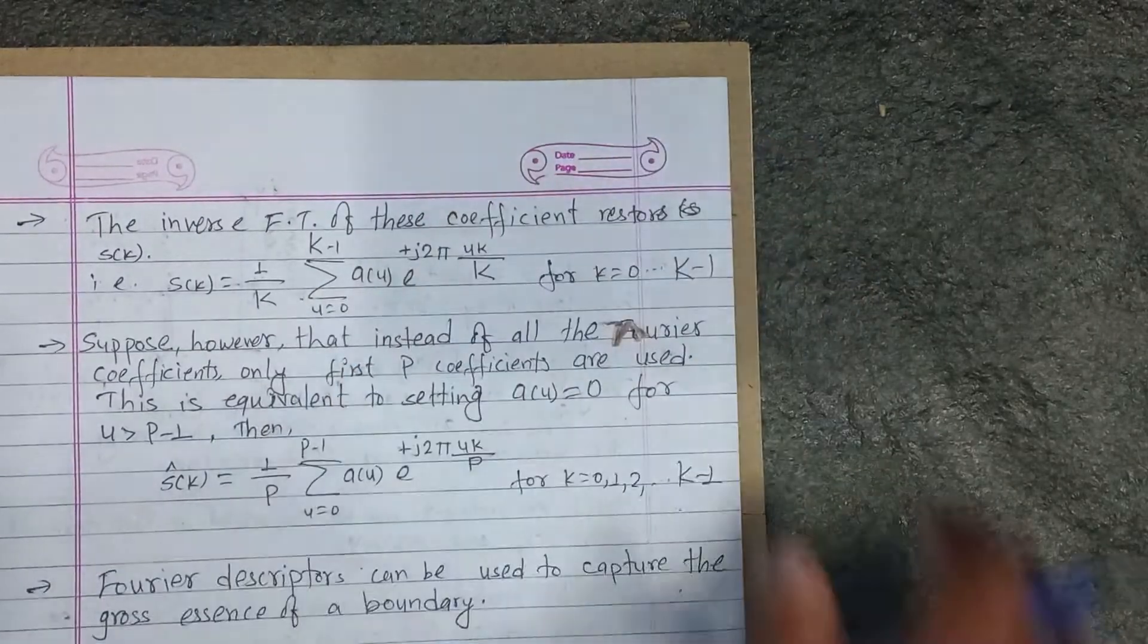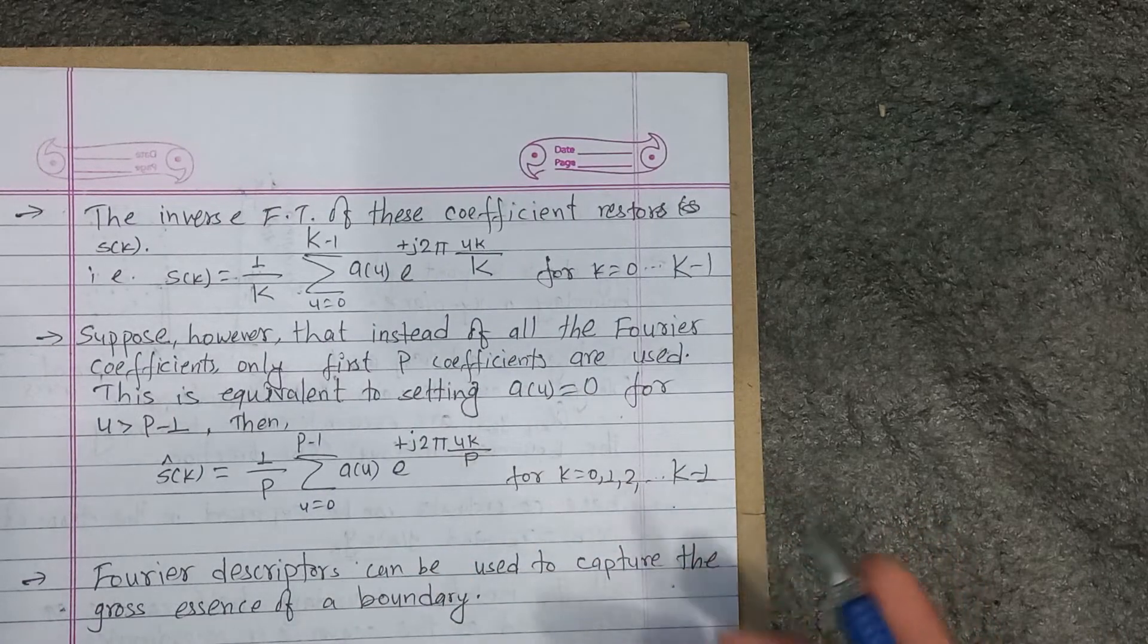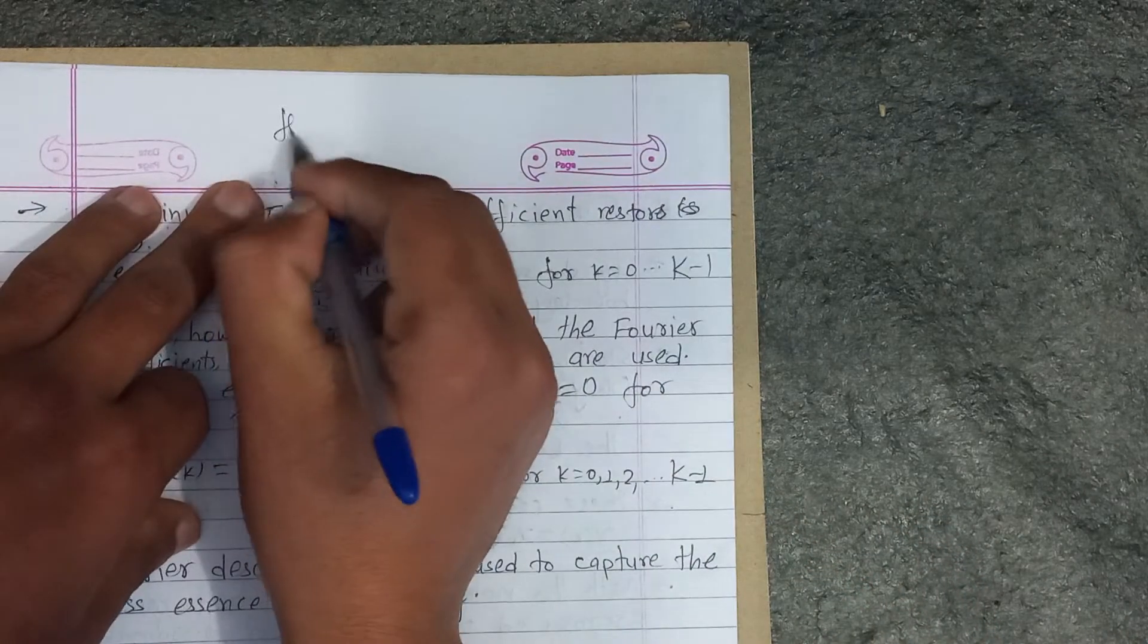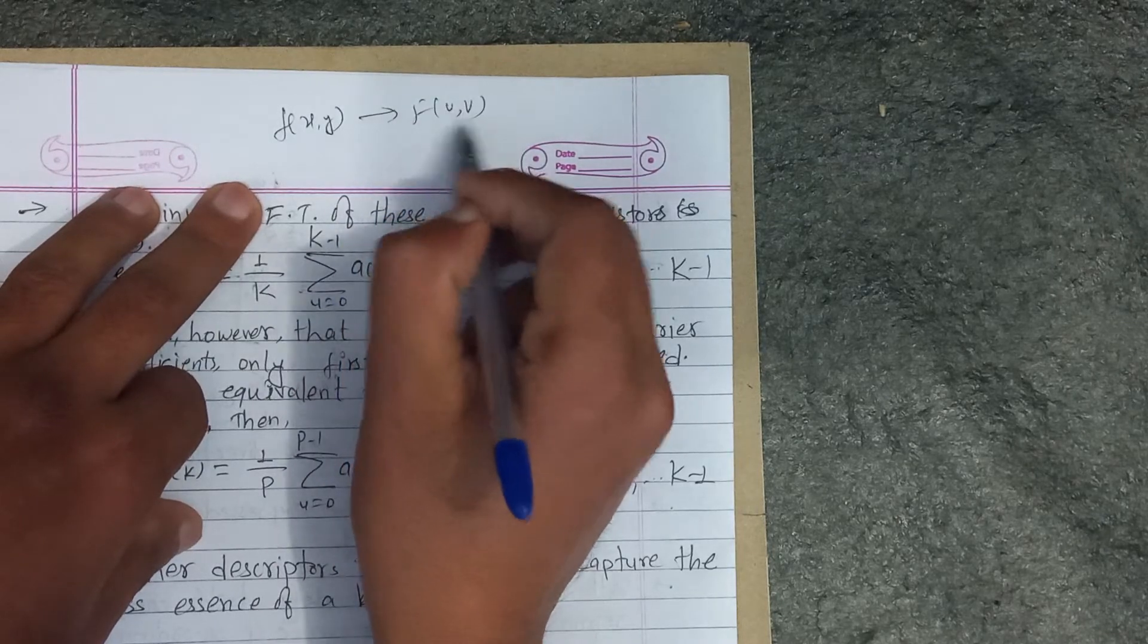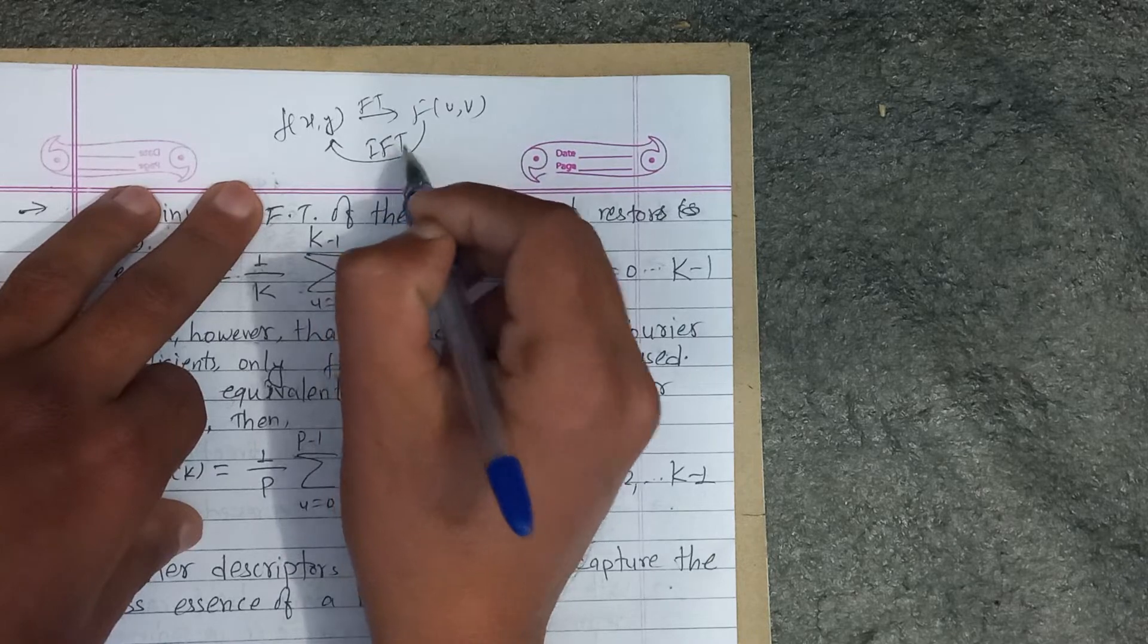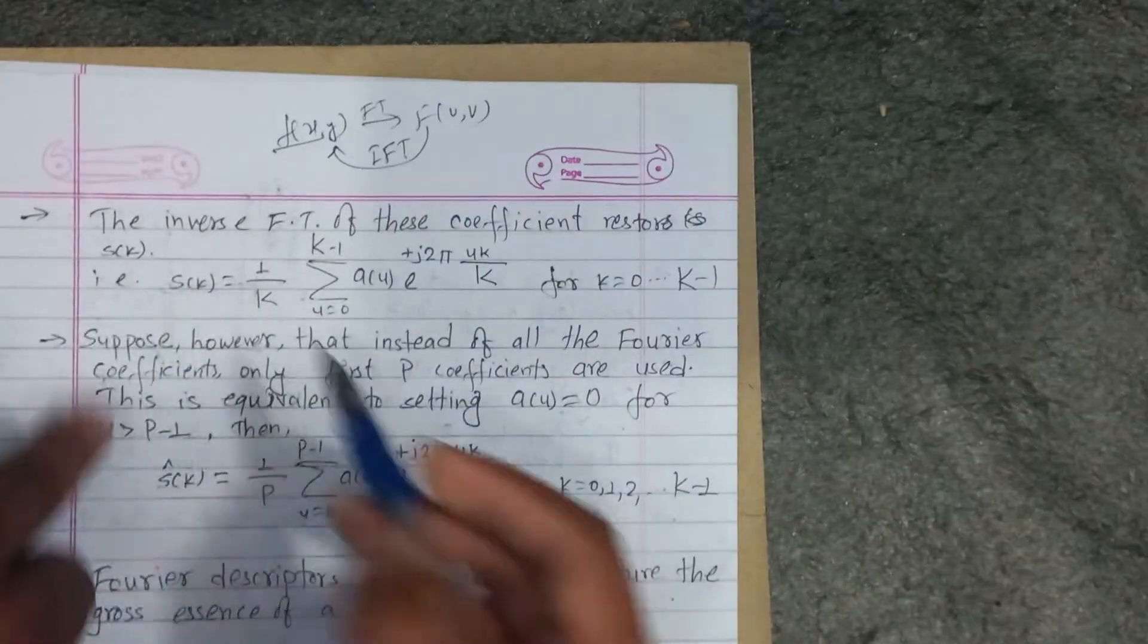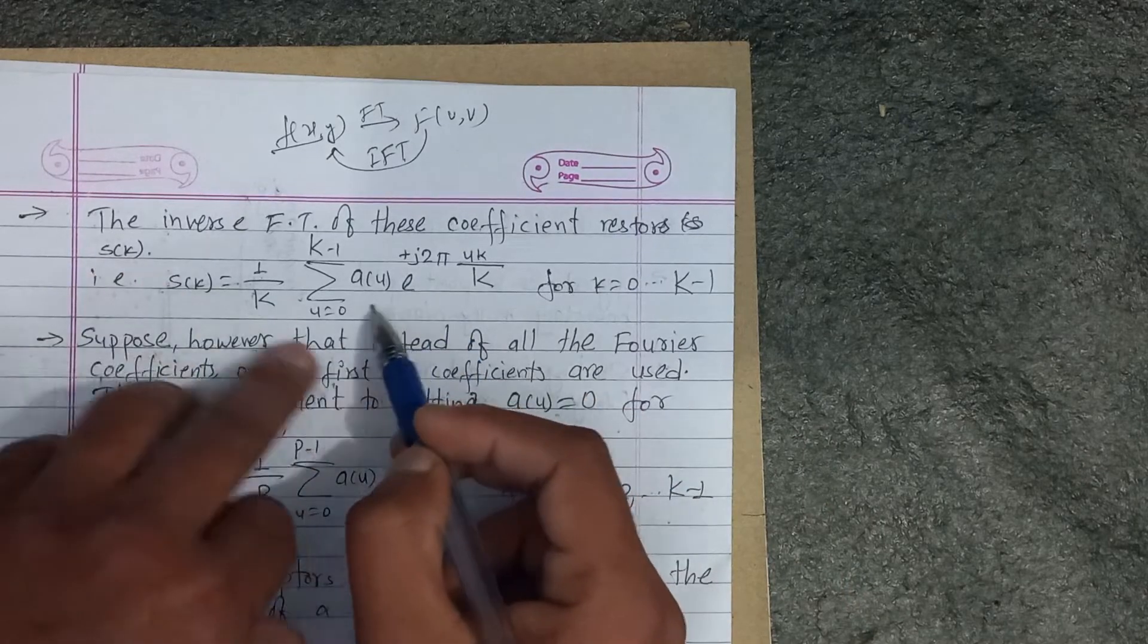The inverse Fourier transform of these coefficients restores s(k), very simple. These Fourier transform gives s(k).